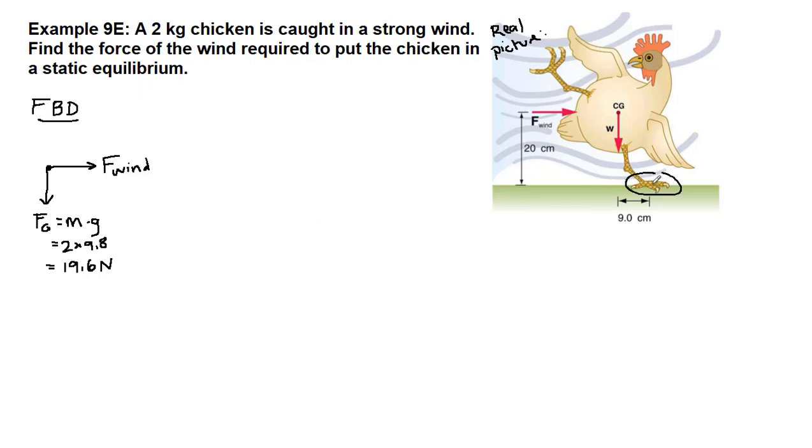Those forces are acting here at the chicken's foot. The chicken is standing on the ground with only one foot because of this poor windstorm, but the ground is providing a normal force. So, the normal force is acting at the ground, at the chicken's foot.